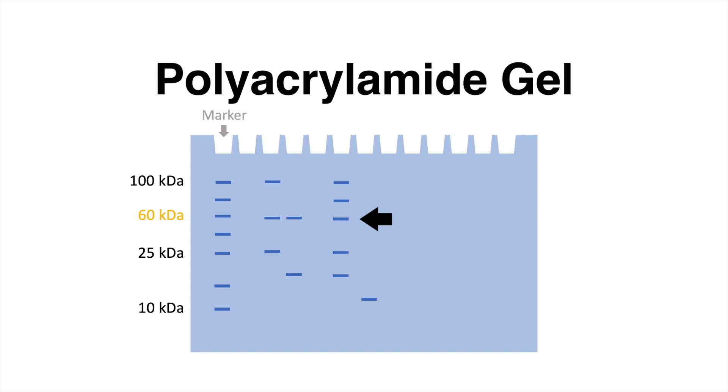However, that will not reveal which proteins are present in this sample. It could be the protein of interest, which has a molecular weight in this range, but the band could have also been caused by other proteins. To confirm the presence of a specific protein, a western blot has to be performed.